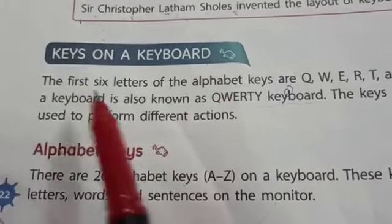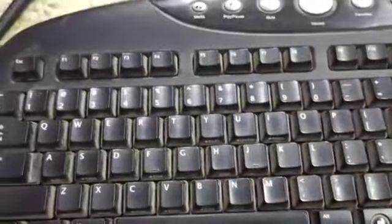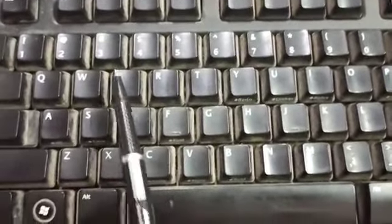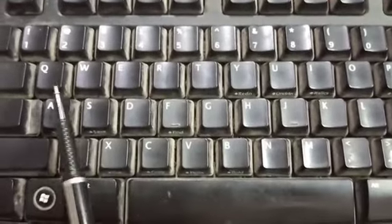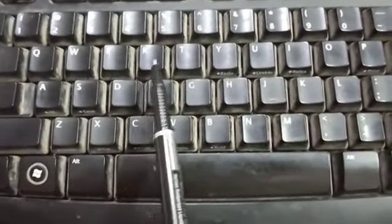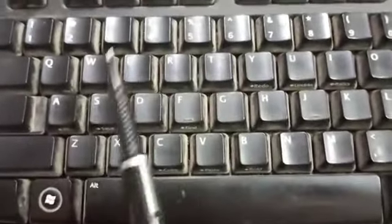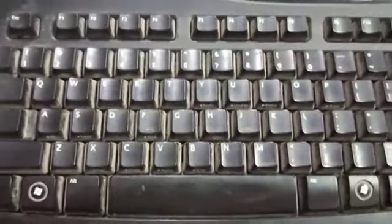Now we will discuss about the keys on the keyboard. The keyboard is divided into different categories of keys. The first category is alphabet keys. There are 26 alphabet keys on the keyboard. These keys are not arranged in alphabetical order. The first six letters start from Q, W, E, R, T and Y. That is why the keyboard is known as the QWERTY keyboard. All these keys are used to type letters and words. With the help of alphabet keys, you are able to write words and sentences on the computer.